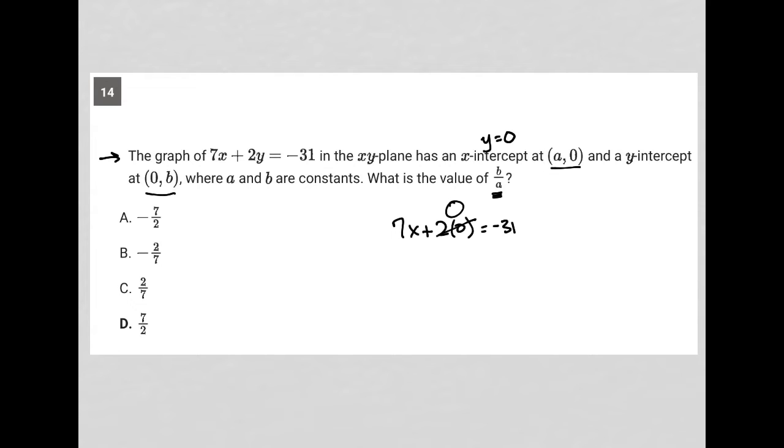This whole term goes to zero, which means I'd be left with 7x equals negative 31, which I can divide both sides by 7 and I'd have x equals negative 31 over 7.